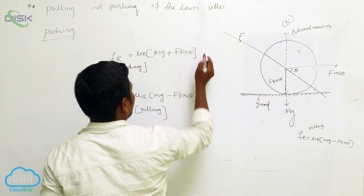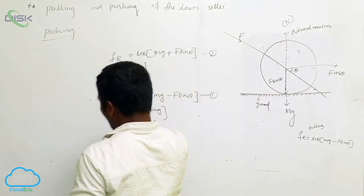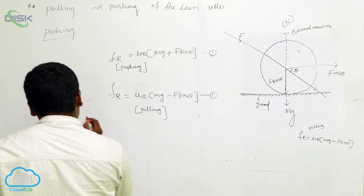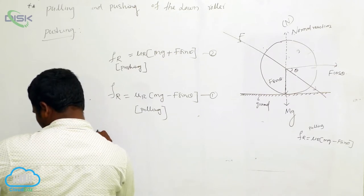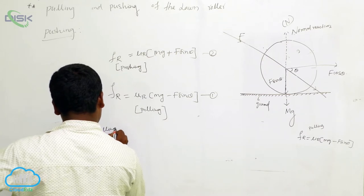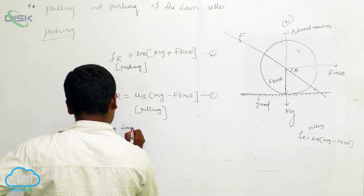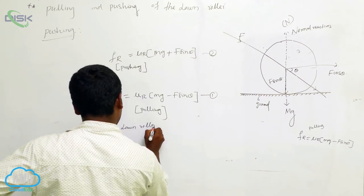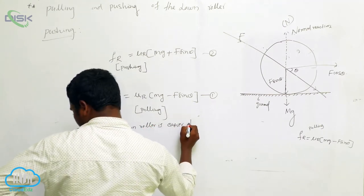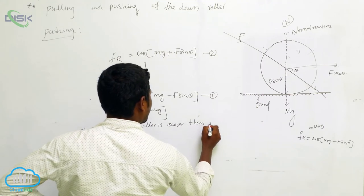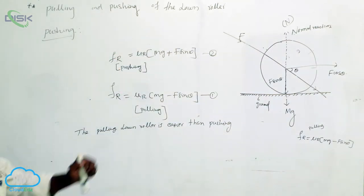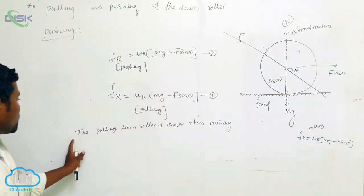For pulling, this gives us equation number one and equation number two. If you observe both equations carefully, the conclusion is that pulling the lawn roller is easier than pushing.